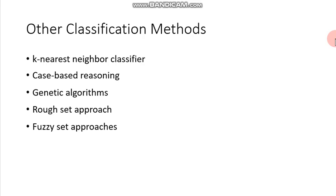There are different classification methods. We have covered the k-nearest neighbor classifier and case-based reasoning. Today we will see a brief introduction about genetic algorithms, the rough set approach, and fuzzy set approaches.